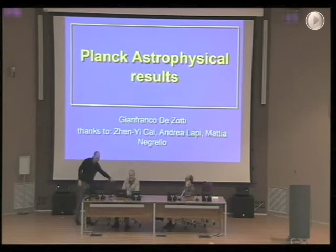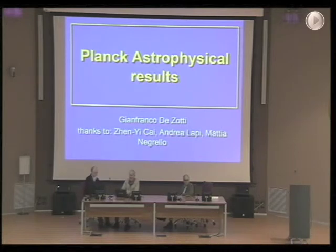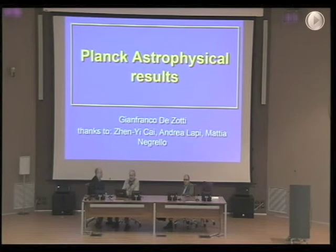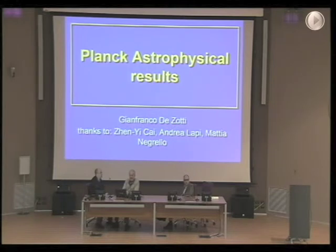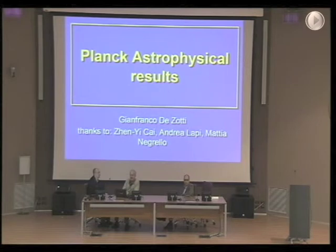Let's start on the astrophysics. Carlo already said that in order to reach the detailed CMB map, you need to remove a lot of components that are in the foreground of the CMB itself. On one side, these components are a disturbance that you want to remove. From the astrophysical point of view, they are extremely interesting. Planck discovered a frequency range which is largely unexplored by other experiments, and even in the range where there are other data, those data do not have the quality, sky coverage, angular resolution, or sensitivity of Planck. Therefore, there is a lot of astrophysics that can be extracted from the Planck maps.